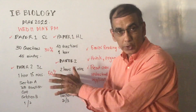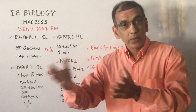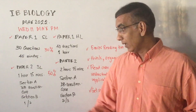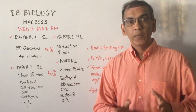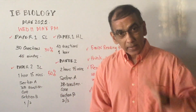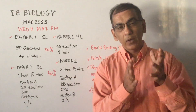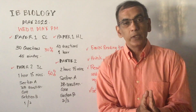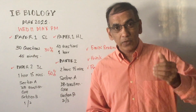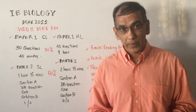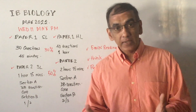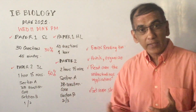After a short break — or some centers may not even allow you to leave the room — you move into Paper 2. Paper 2 for standard level is one hour and 15 minutes long. It's made up of two sections. The first question of Section A will be on unfamiliar material, based on data extracted from a relevant and recent research paper, covering about 12 to 13 marks out of the total 50 marks for the paper.